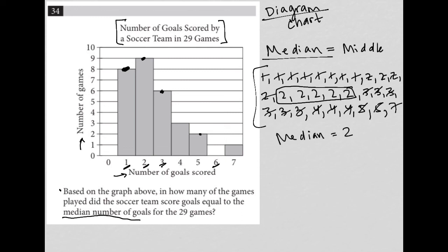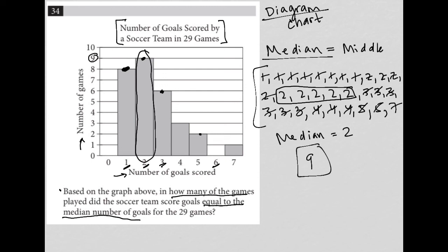The question says: how many of the games played did the soccer team score goals equal to the median? Well, that means we're looking at two goals, and there were nine games played that equaled the median. So nine is the answer.